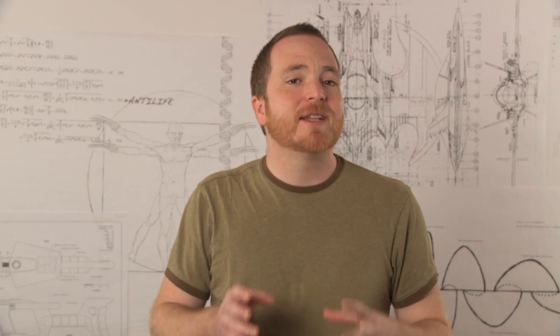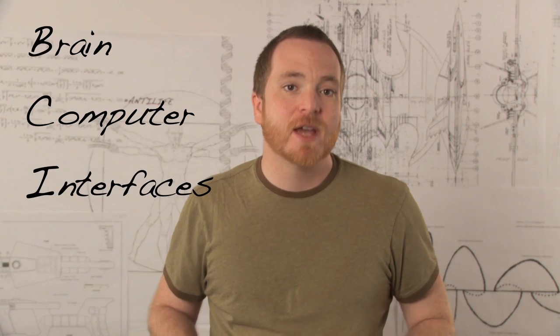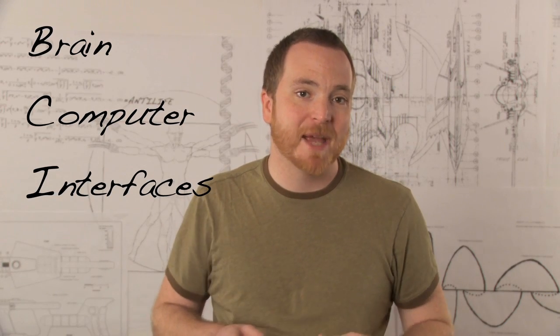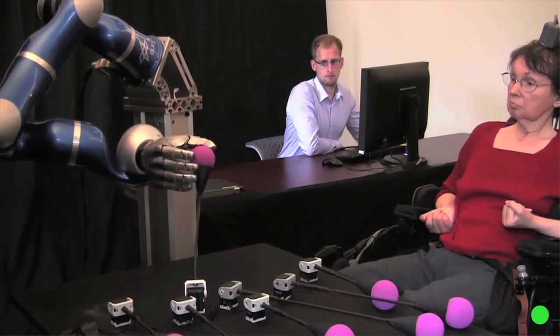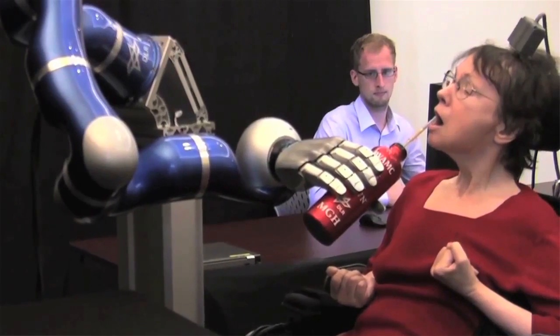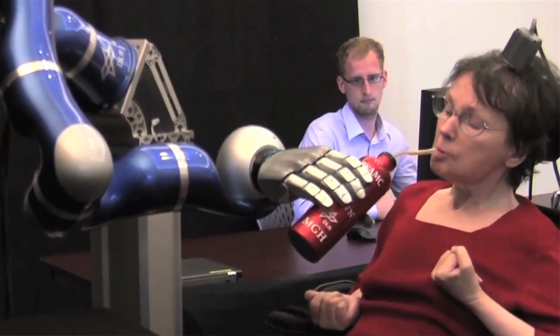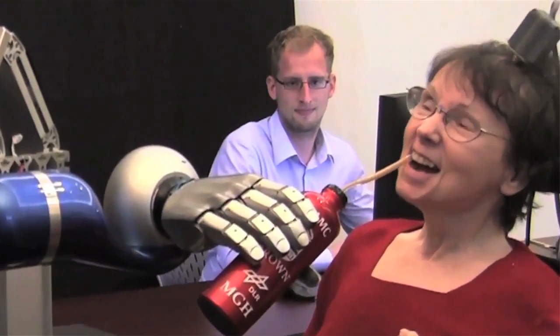For this reason, scientists have created BCIs, or brain-computer interfaces. These allow people to directly control computers and robotic appendages with their thoughts. The one seen here is the BrainGate system, developed by Brown University. This is Kathy Hutchinson, who was paralyzed after suffering a stroke. She's picking up a bottle of water and bringing it to her mouth for the first time in over 15 years.